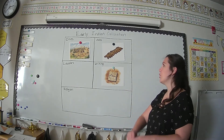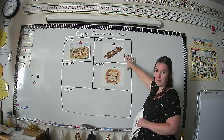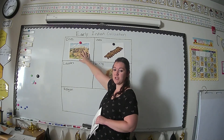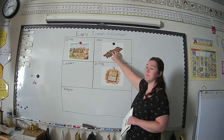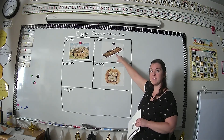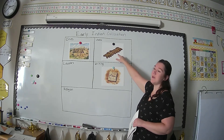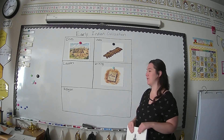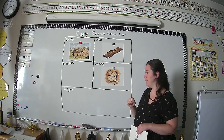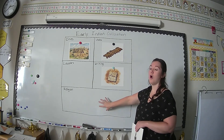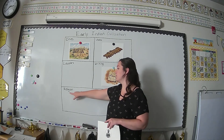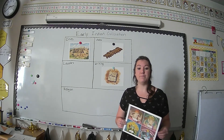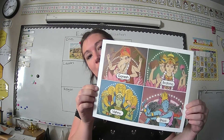We're going to go back to our early Indian civilization chart that we made in our last lesson. We talked about how cities are an important part of civilization, like Mohenjo-daro. We talked about how important jobs are, and how farming is an important job. We also talked about how writing is important so people can communicate and share important information. Today, we talked about religion. The religion widely practiced in ancient India is Hinduism, which believes in multiple gods and goddesses.